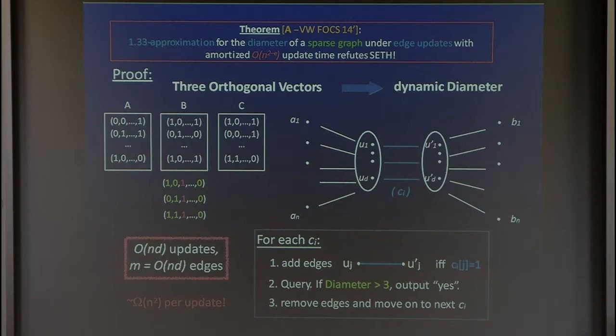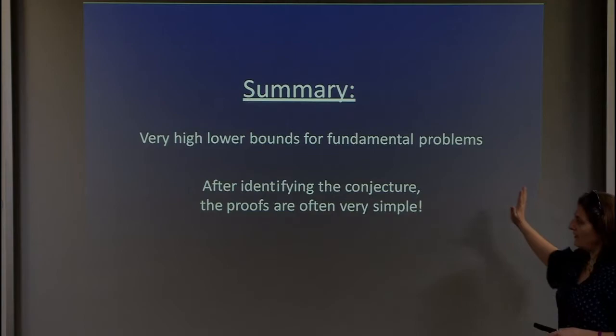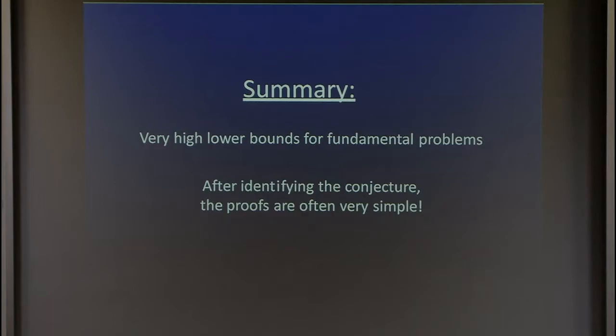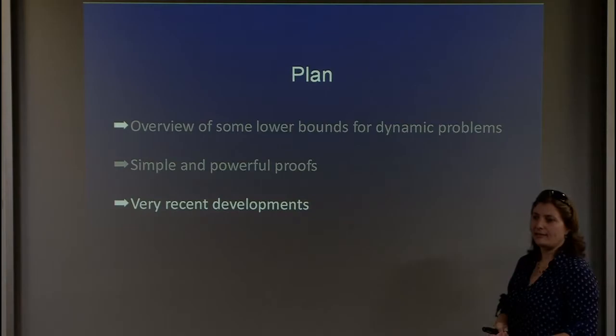Because we started from 3-OV rather than 2-OV, we proved a higher lower bound. As a summary: we can get very strong conditional lower bounds for fundamental problems, and after identifying the right conjecture, the reductions are often not too hard — simple enough to present in courses.